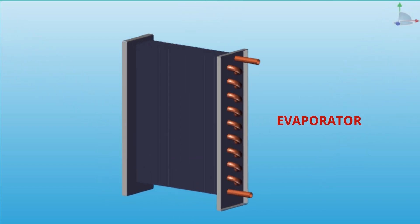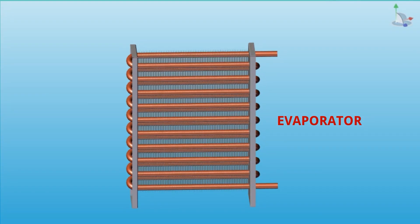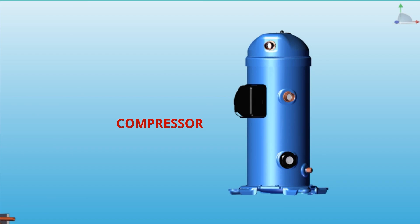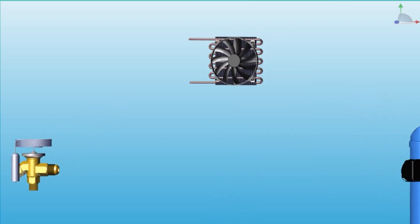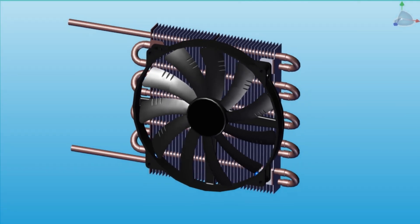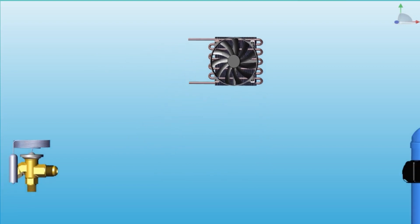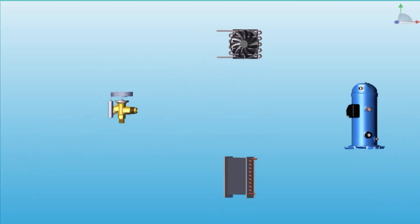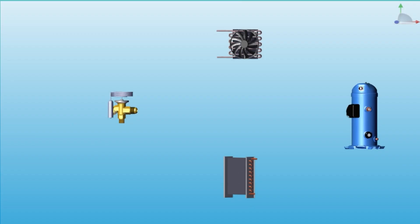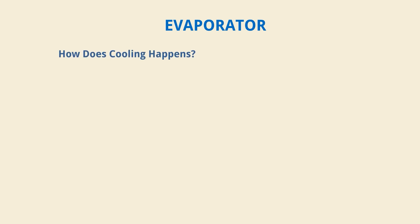In the evaporator, as the name suggests, evaporation happens. It is basically a coil for heat transfer. The second part, which we call the heart of the refrigeration cycle, is the compressor — as the name suggests, compression happens. It acts like a heart: a heart pumps blood, and the compressor pumps the refrigerant. Before learning the evaporator in detail, let's learn how cooling happens.